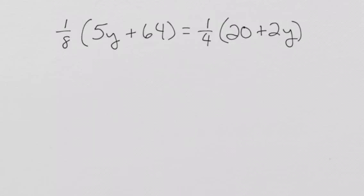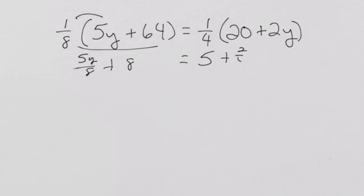Now, let's work it another way and see if we get the same answer. We're still going to do the old distributive property on this one. It's the exact same problem. We get five y over eight plus eight equals five plus two-fourths y.